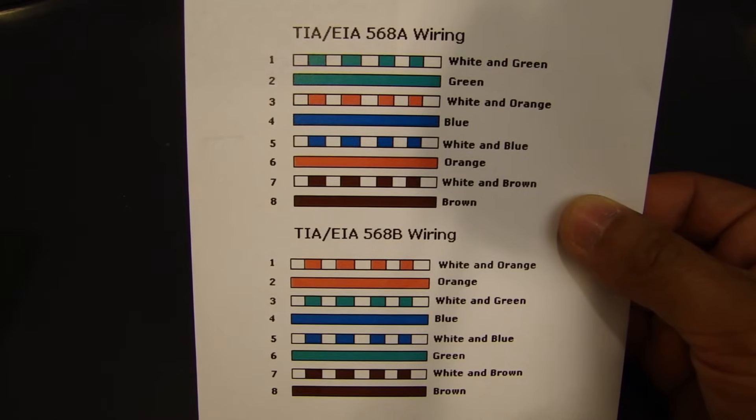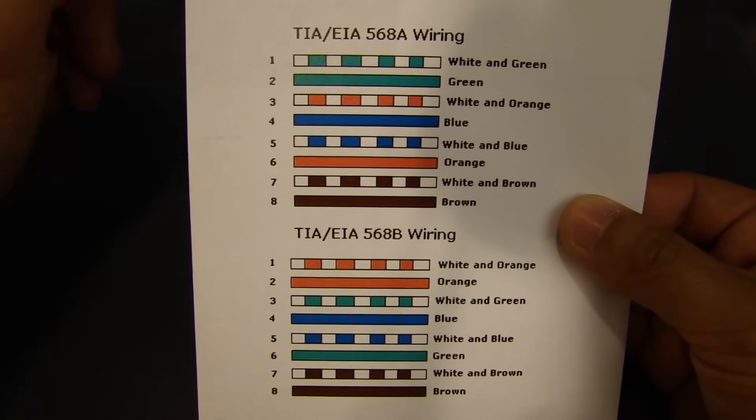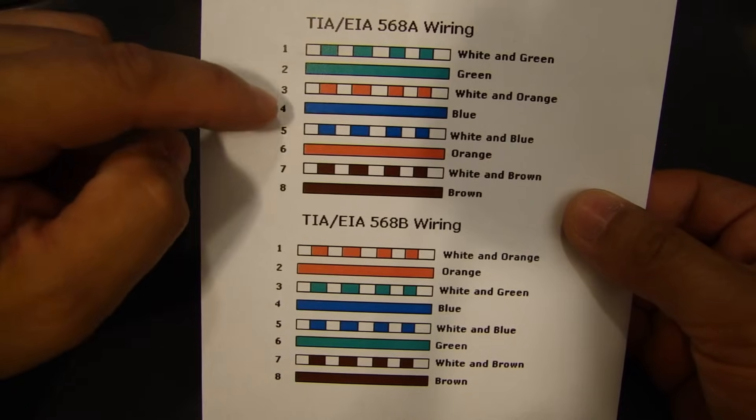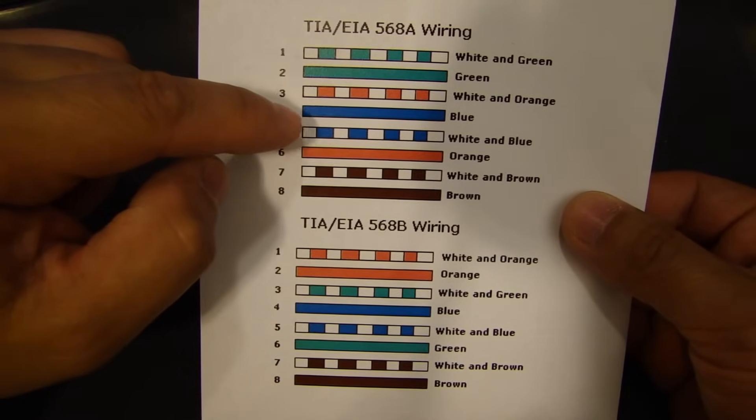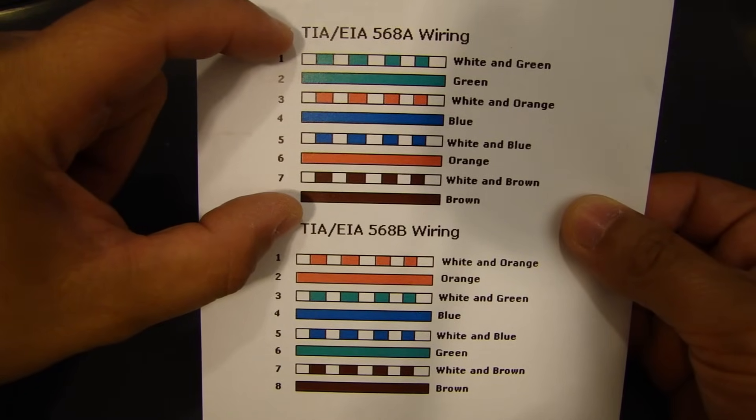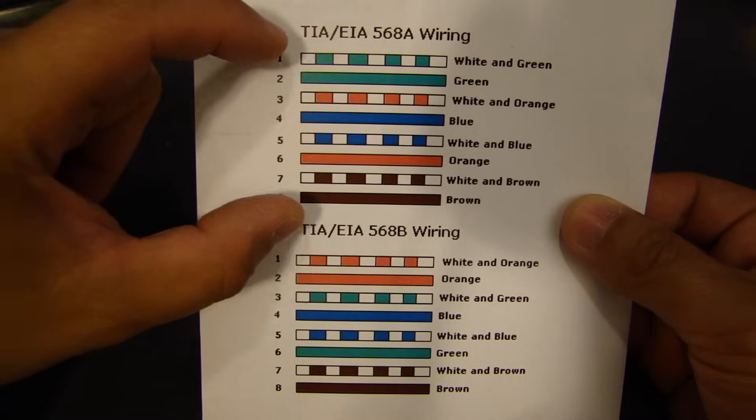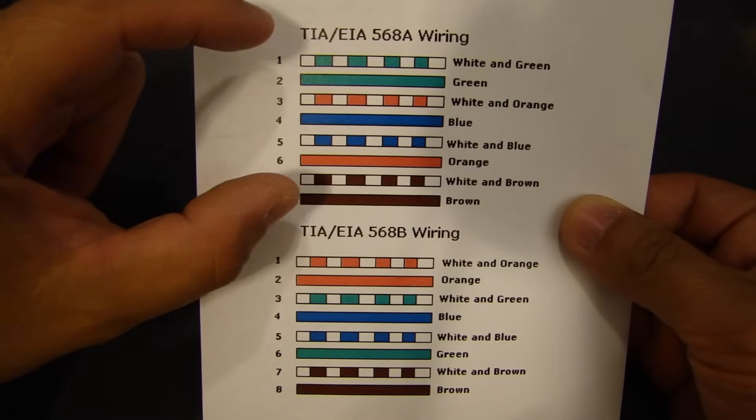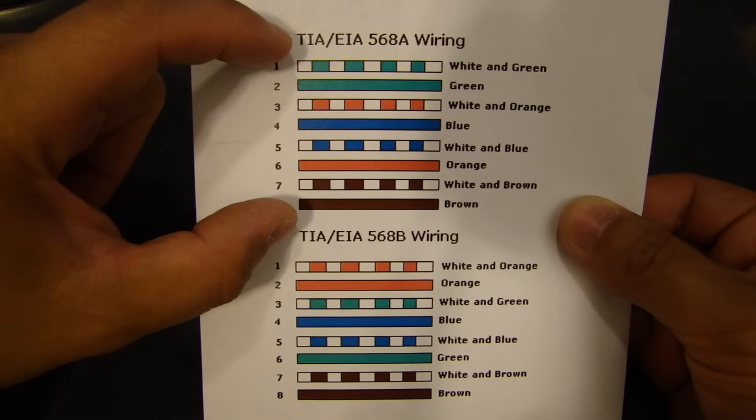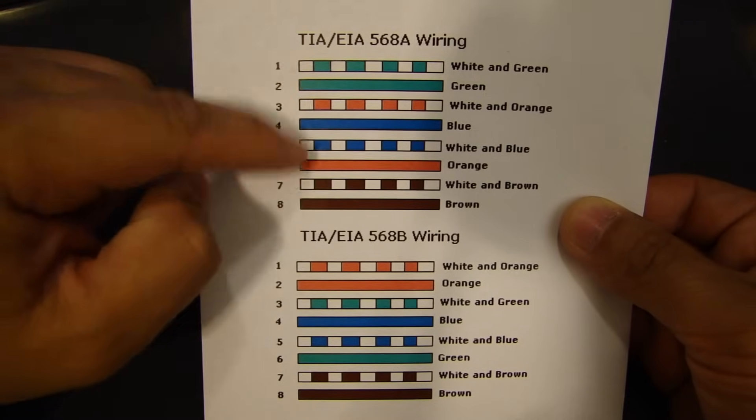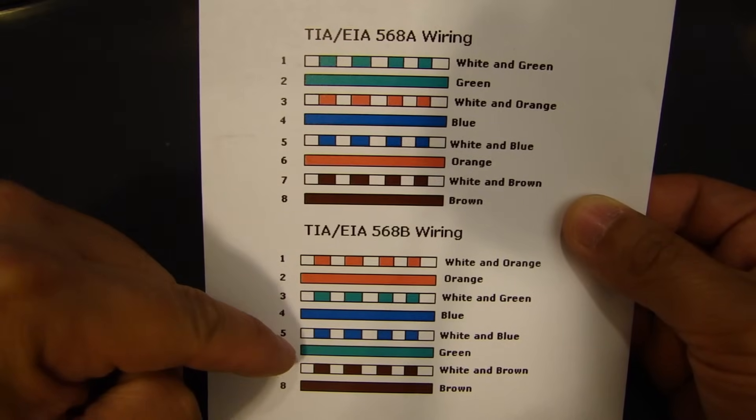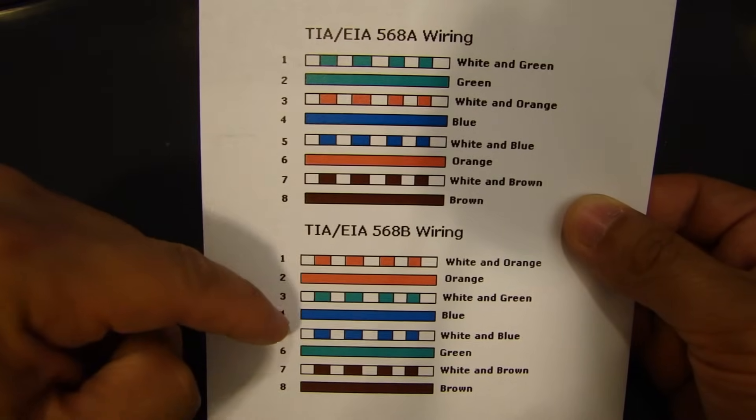So what you need to know is that if you're making a straight through Cat5 cable, what you want is at both ends of that cable to have this same pinout. So if you have same pinout on both ends of that one cable, then it's a straight through. If you want to make a crossover cable, what you'll need is that one end need to be this wiring pinout. On the other end, you need to have this one. Okay, so they differ.